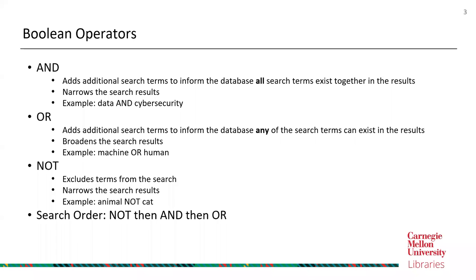The next boolean operator is OR. The OR operator adds additional search keywords to inform the database that any of the search terms can exist in the results, meaning either or both key terms need to show up in the resulting documents. OR broadens the search results. For example, 'machine OR human' means either machine, human, or both can appear.